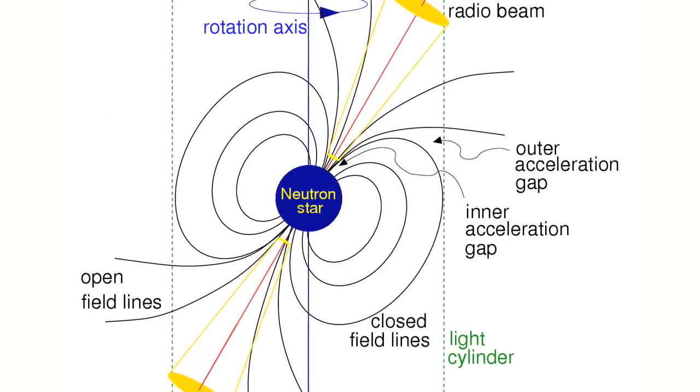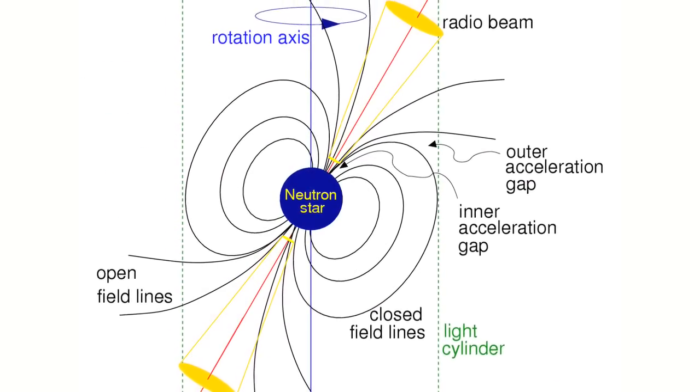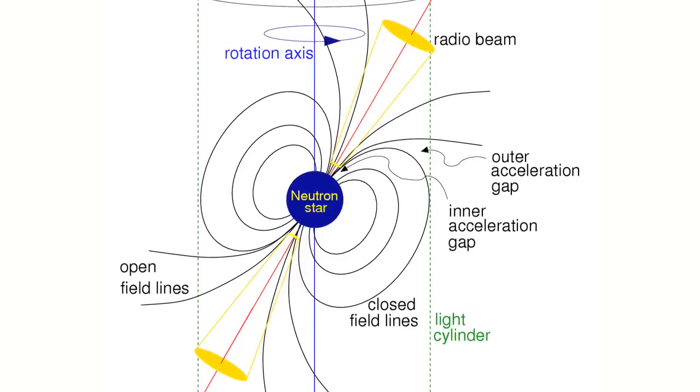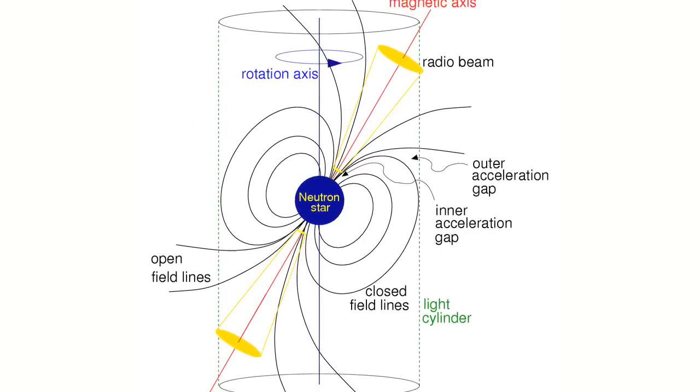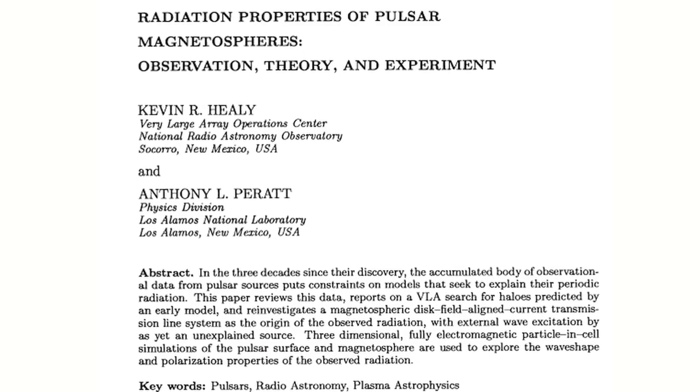In fact, scientists attempting to explain this puzzling switching of emissions are considering changes in the star's magnetosphere, which does bring them closer to the electrical interpretation. In fact, in 1995, the renowned plasma physicist Anthony Peratt and co-author Kevin Healy published the paper Radiation Properties of Pulsar Magnetospheres.